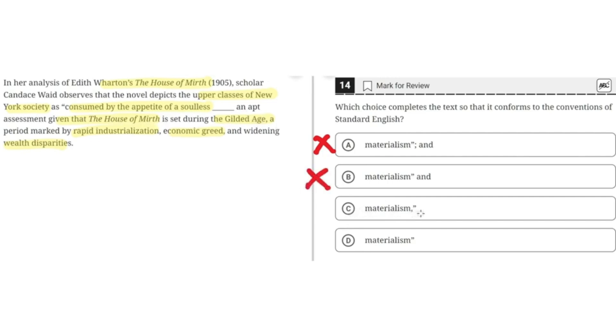C, materialism comma. This seems to be correct. This places the comma in the quotation marks and separates the independent clause from the supplementary phrase. So C seems to be the correct answer.